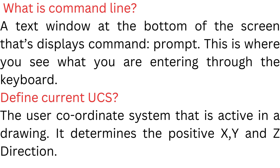Define Current UCS. The user coordinate system that is active in a drawing. It determines the positive x, y, and z directions.